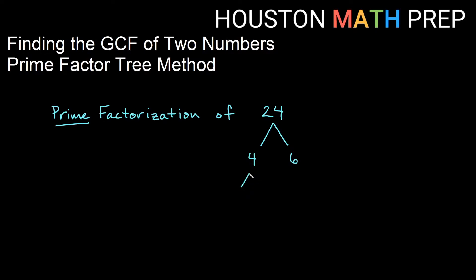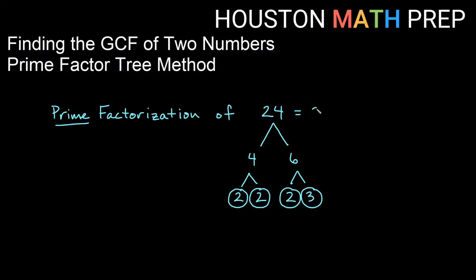I can break four down further — I can make four into two times two. Now two is a prime number because it is only one times two as far as factors go, so both of these are prime numbers. I'm going to circle these on my factor tree. And then six can be broken down further into two times three, so we have prime factors of six being two and three. Everything circled tells me that the prime factorization of 24 is two times two times two times three, written in ascending order. That's the prime factorization of 24.